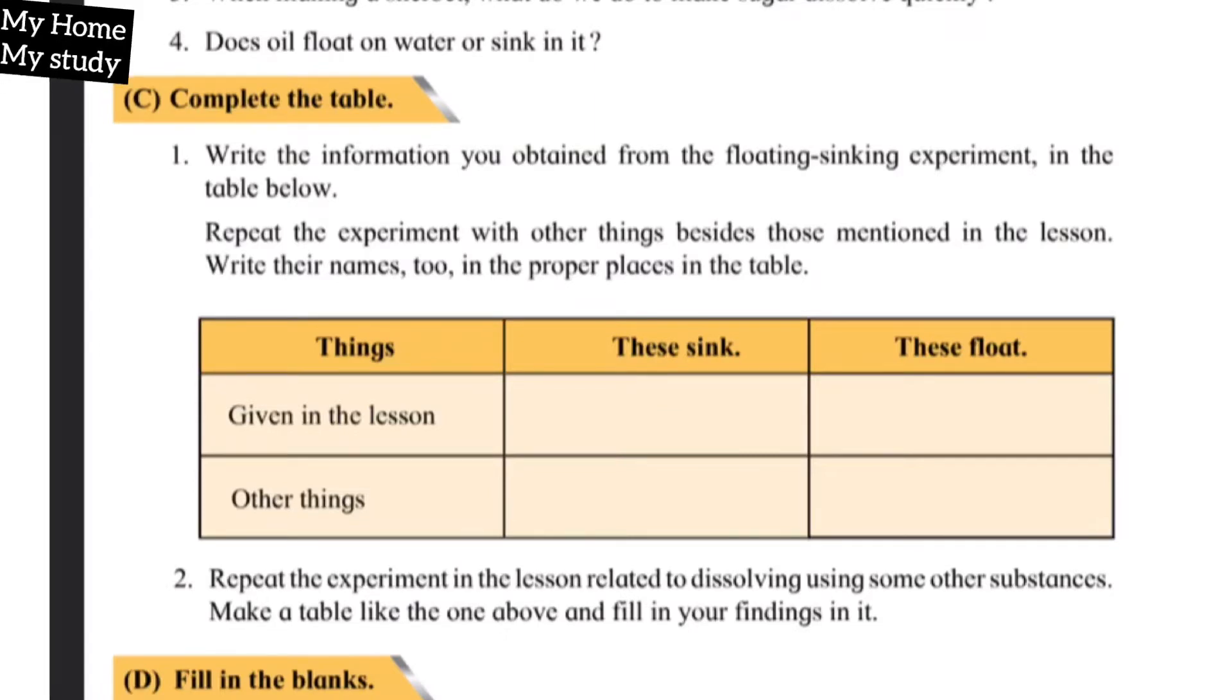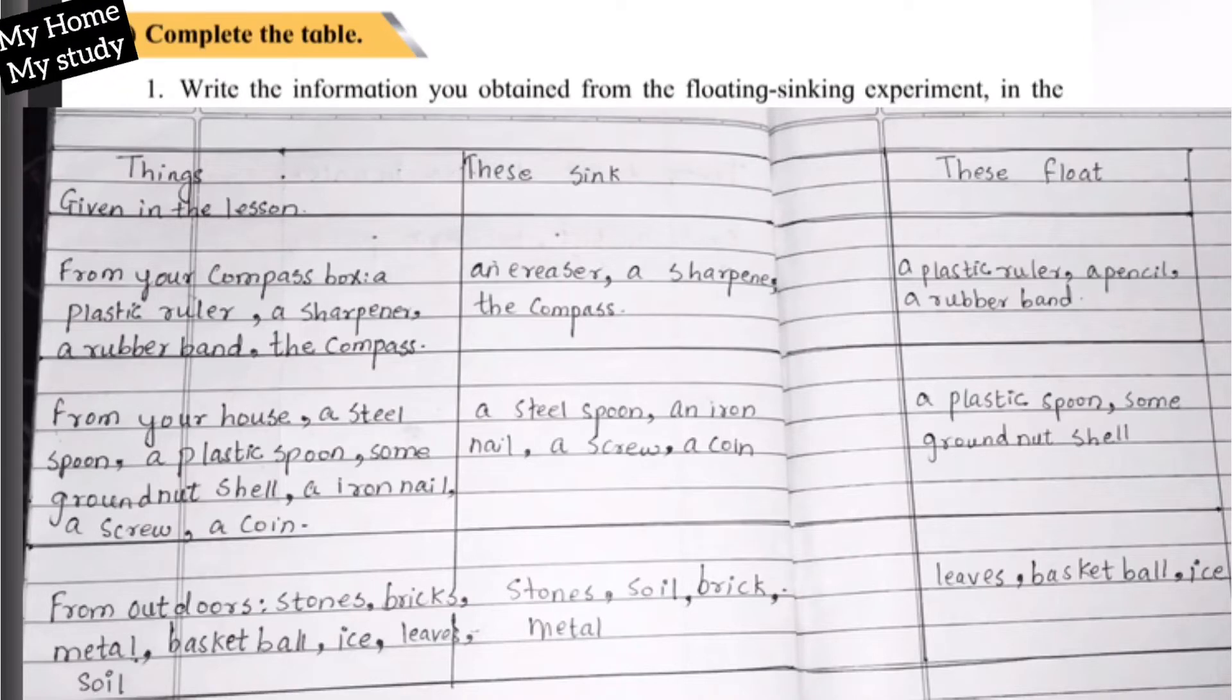Now see, things from your compass box: a plastic ruler, sharpener, a rubber band, and the compass. Which things will sink? An eraser, a sharpener, and the compass will sink down. And which will float? A plastic ruler, a pencil, a rubber band. Now second, from your house: a steel spoon, a plastic spoon, some groundnut shell, an iron nail, a screw, a coin. These sink will include a steel spoon, an iron nail, a screw, and a coin. And these float will include a plastic spoon, some groundnut shell.